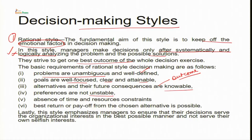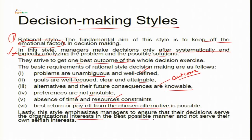Rational decision making also requires stable preferences, a relatively stable environment, absence of time and resource constraints — meaning you have ample resources and time — and the possibility of the best return from the chosen alternative. This style emphasises that managers ensure their decisions serve organisational interests in the best possible manner, not their selfish interests.